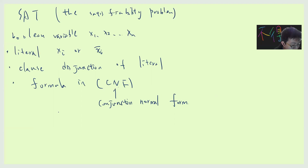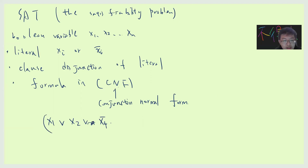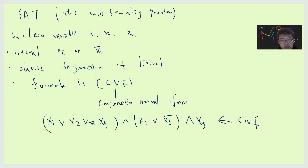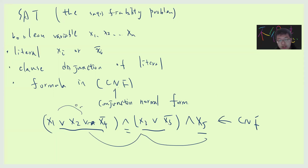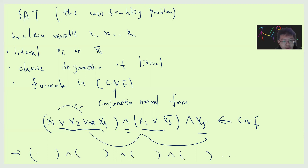And also a thing called the formula in CNF — this is called conjunction normal form. Basically the formula looks like a conjunction of clauses. For example, it's (x1 or x2 or not x4) and (x2 or x3-bar or x5). So this is a CNF formula. Conjunction normal form means you write each clause, and everything between clauses is AND.